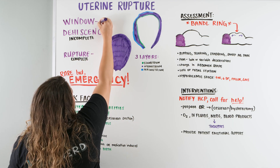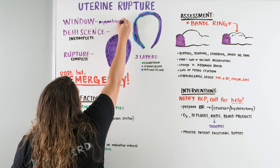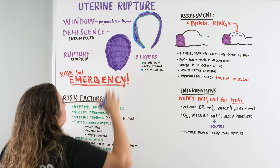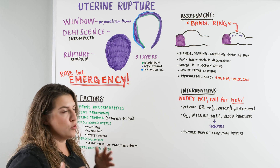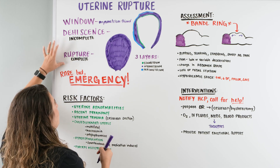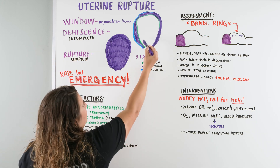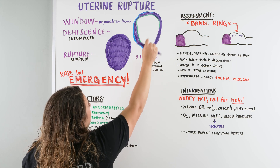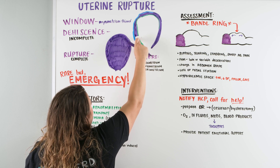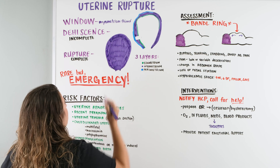The myometrium becomes a little more see-through in that area. This is not considered a rupture — it's just an area that could potentially become a ruptured area. Then we have dehiscence, which is an incomplete tear. With these three layers — endometrium, myometrium, and perimetrium — there is a tear possibly through the first two layers but not all the way through.